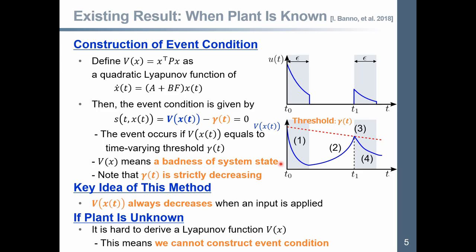In this figure, the larger the value of Vx t, the worse the state of the system. First, intermittent state feedback is applied into plant at this timing. At the same time, the value of Vx t is strictly decreasing with respect to time t.